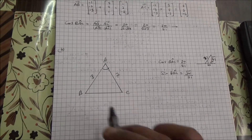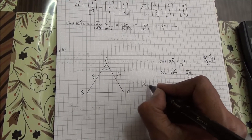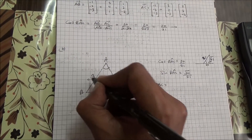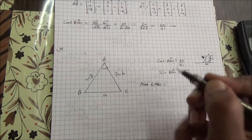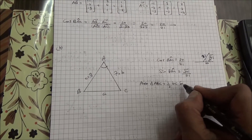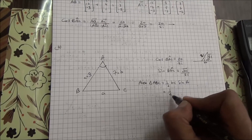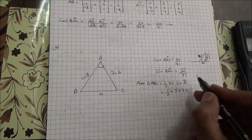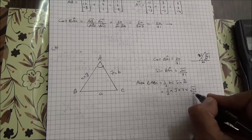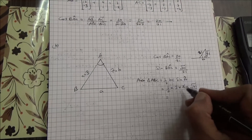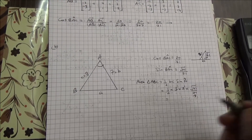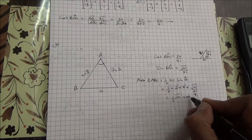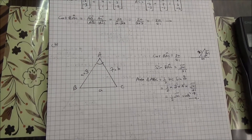Now if we want to find the area of triangle ABC, the area can be given as half times BC times sine of A. So we have half times 3 times 7 times root of 41 over 21, and you get then half root of 41 units squared. So this is the second part of the question.